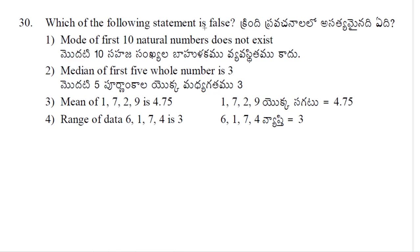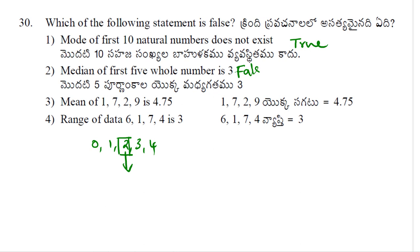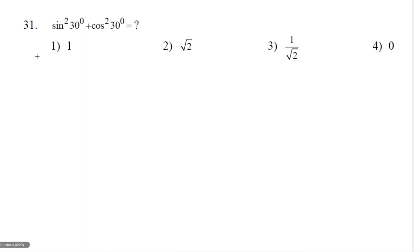30th problem: Which of the following statement is false? Statement 1 — mode of first 10 natural numbers does not exist. This is a true statement. Then, median of first 5 whole numbers is 3. Let us find out the median of first 5 whole numbers: 0, 1, 2, 3, 4. The exactly middle value is 2. So median of first 5 whole numbers is 2, not 3. So this is a false statement. Option 2 is correct.